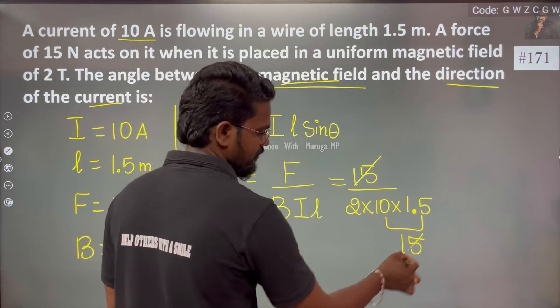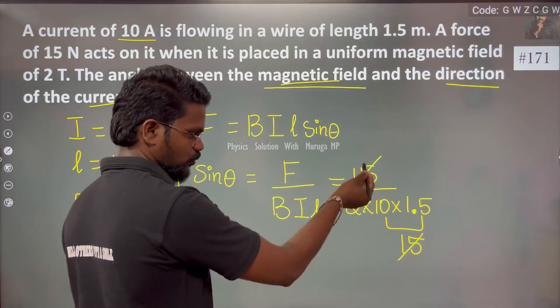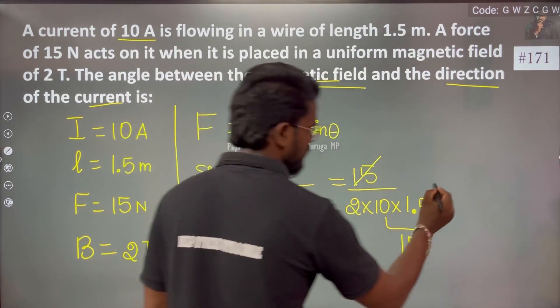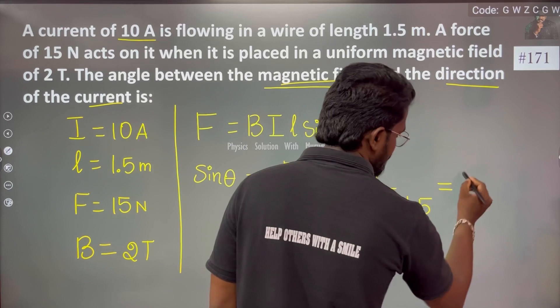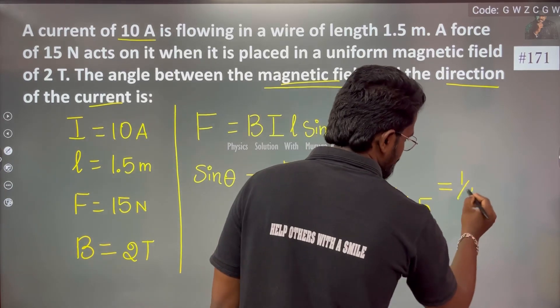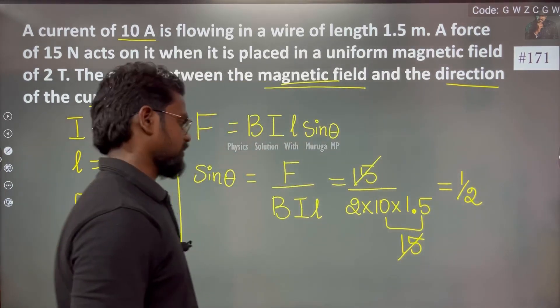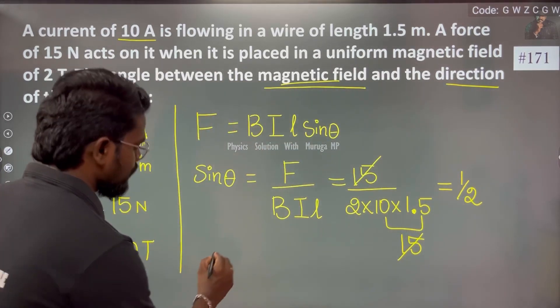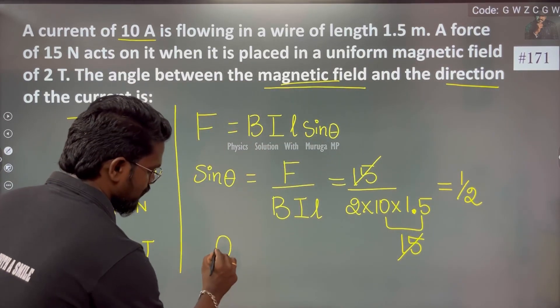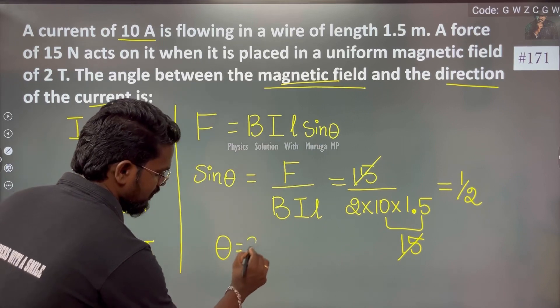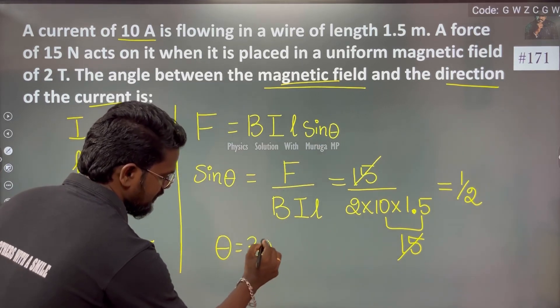Continuing the calculation: 15 over 30 gives us 1 by 2. So sin theta equals 1/2, which means theta equals 30 degrees.